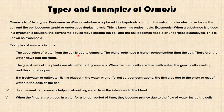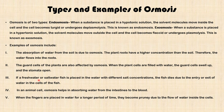Now let's look at examples of osmosis. Number one: absorption of water from the soil is due to osmosis — plant roots have a higher concentration than the soil, therefore water flows into the roots. Number two: the guard cells of the plants are also affected by osmosis; when the plant cells are filled with water the guard cells swell up and the stomata opens. Three: if a freshwater fish is placed in saltwater or a saltwater fish in freshwater, the fish dies due to the entry or exit of water in the cells of the fish.